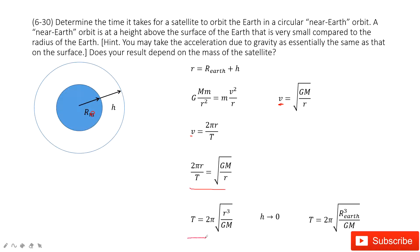And then we can find this T, just equal to 2π times the square root of r cubed over GM. In this one, there is a hint. It tells you, you may take the acceleration due to gravity as essentially the same as that on the surface. What does that mean?